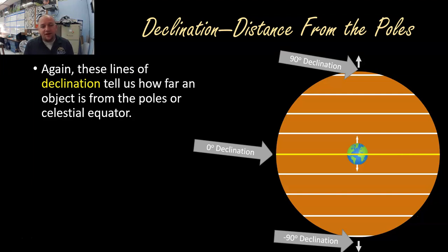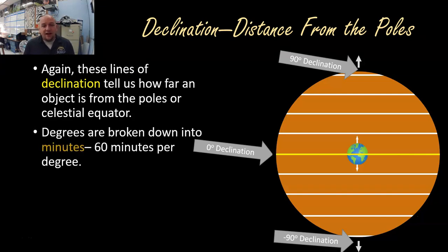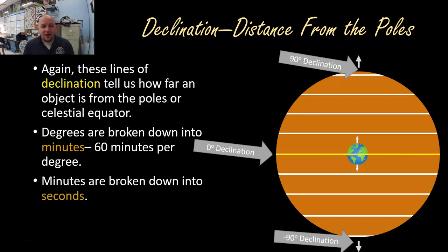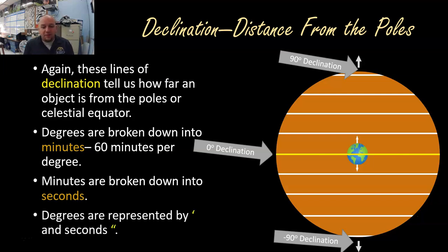Sometimes we need to be very specific about where an object is — not just 20 degrees north, but say 20 and a half degrees. We take degrees and break them down into minutes, with 60 minutes per degree. So 20 and a half degrees north becomes 20 degrees 30 minutes north. We can break those minutes down further into seconds, with 60 seconds per minute — so an object could be 20 degrees, 30 minutes, and 10 seconds north. Minutes are represented by a single hash mark and seconds by double hash marks or quotation marks.